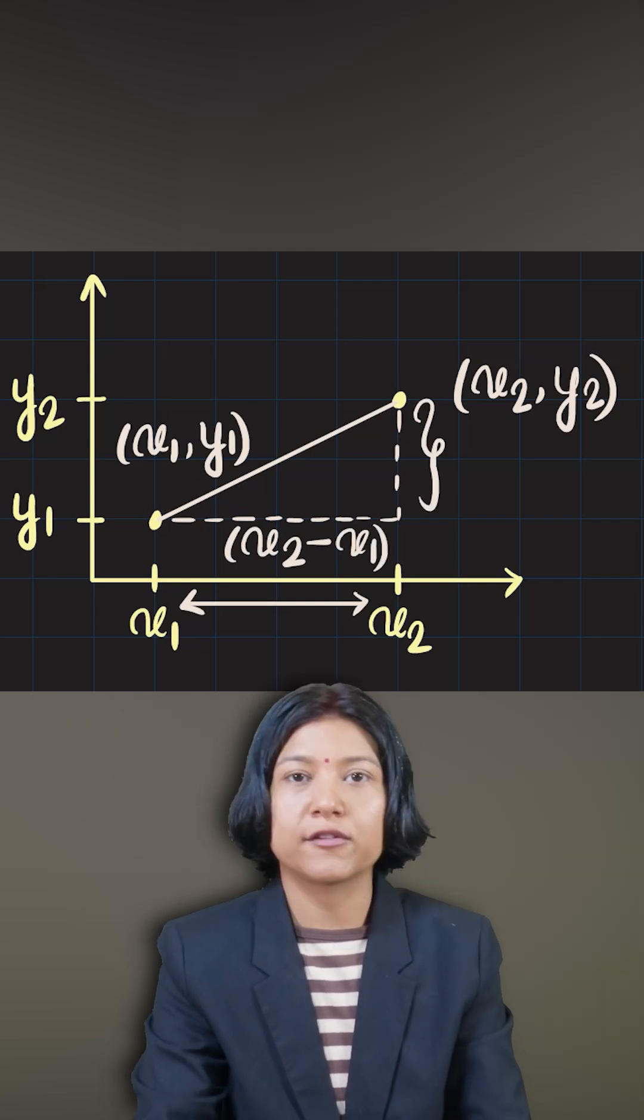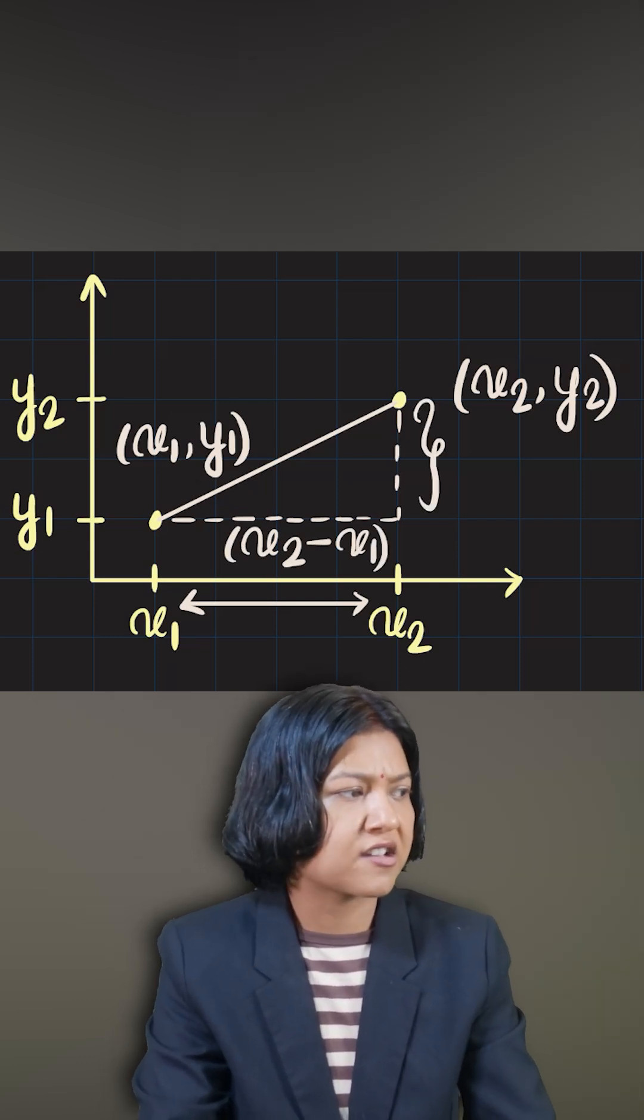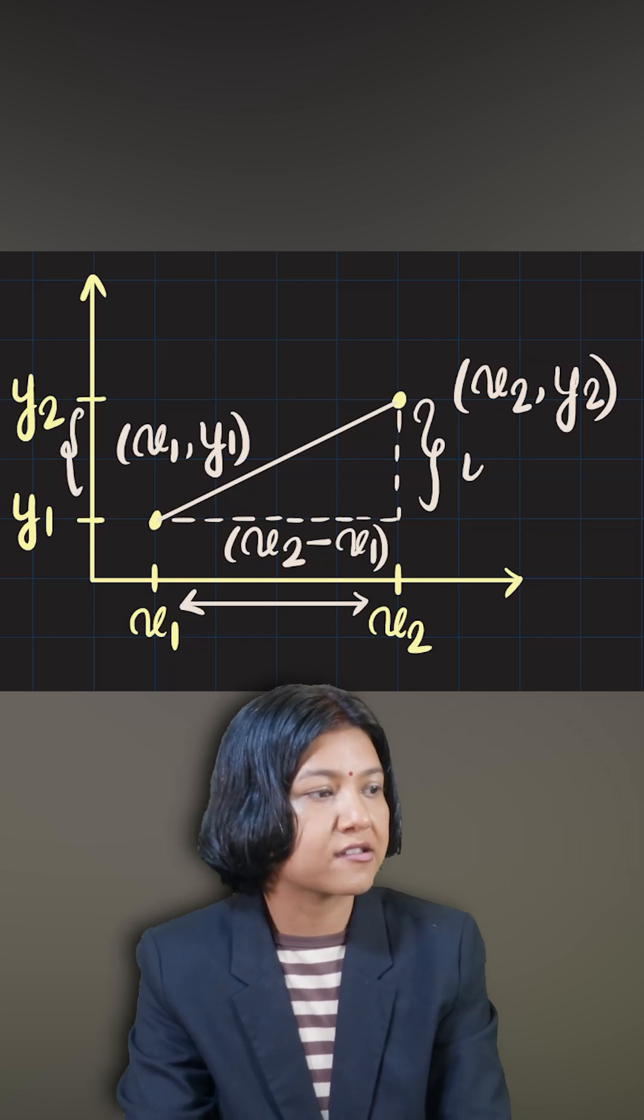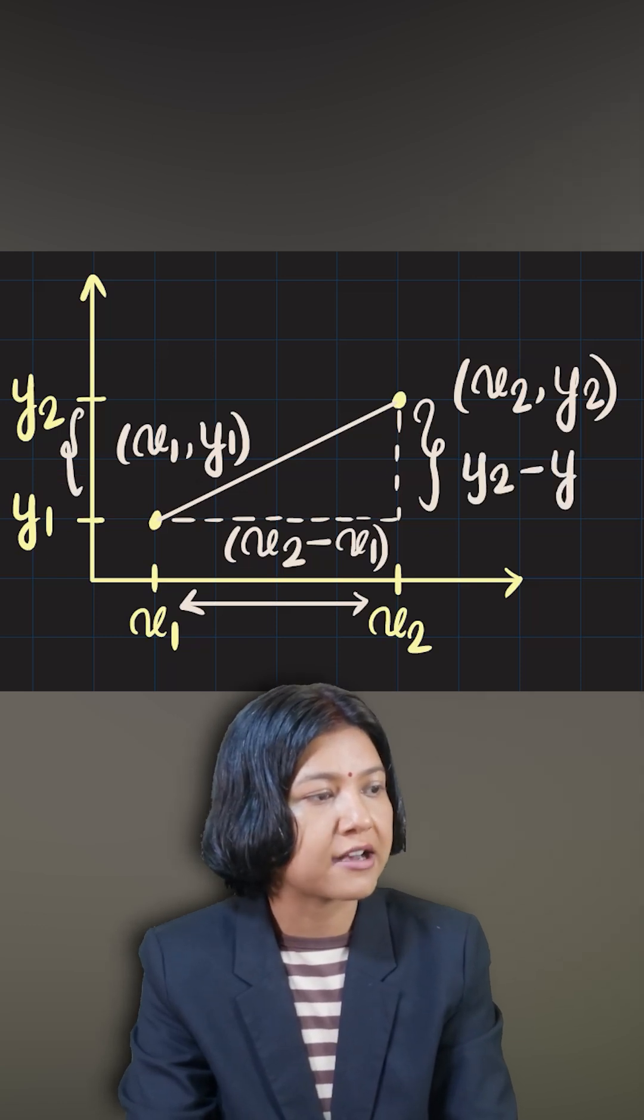And similarly, if you look at the vertical side, if you want to find the distance here, then the distance is just the difference of the y coordinates. So that is the reason we write this as y2 minus y1.